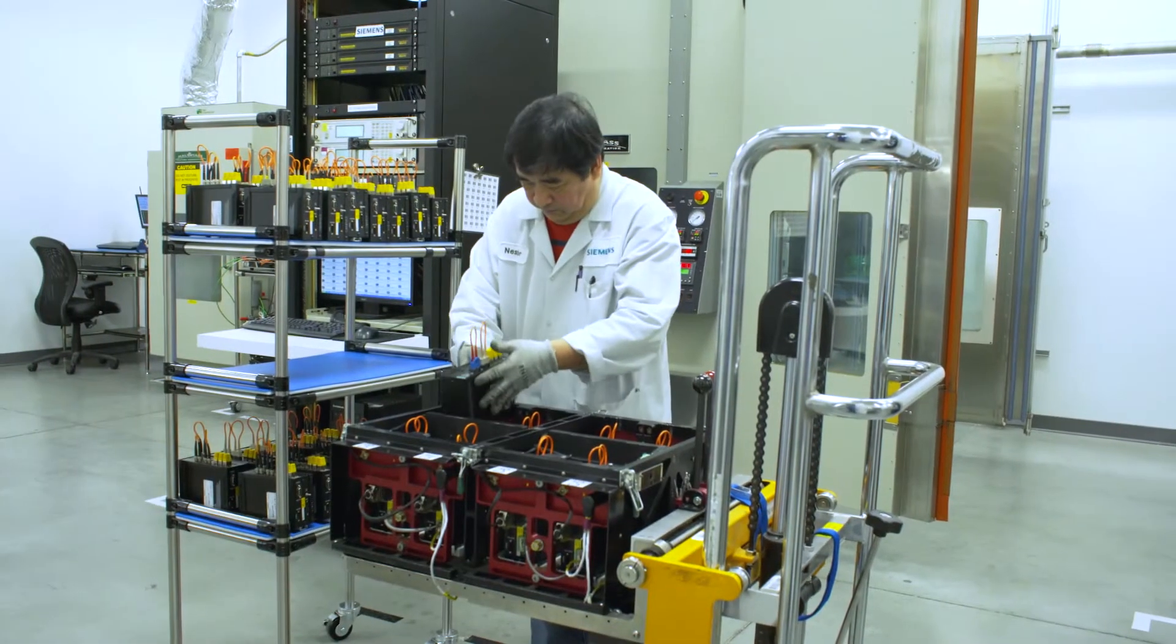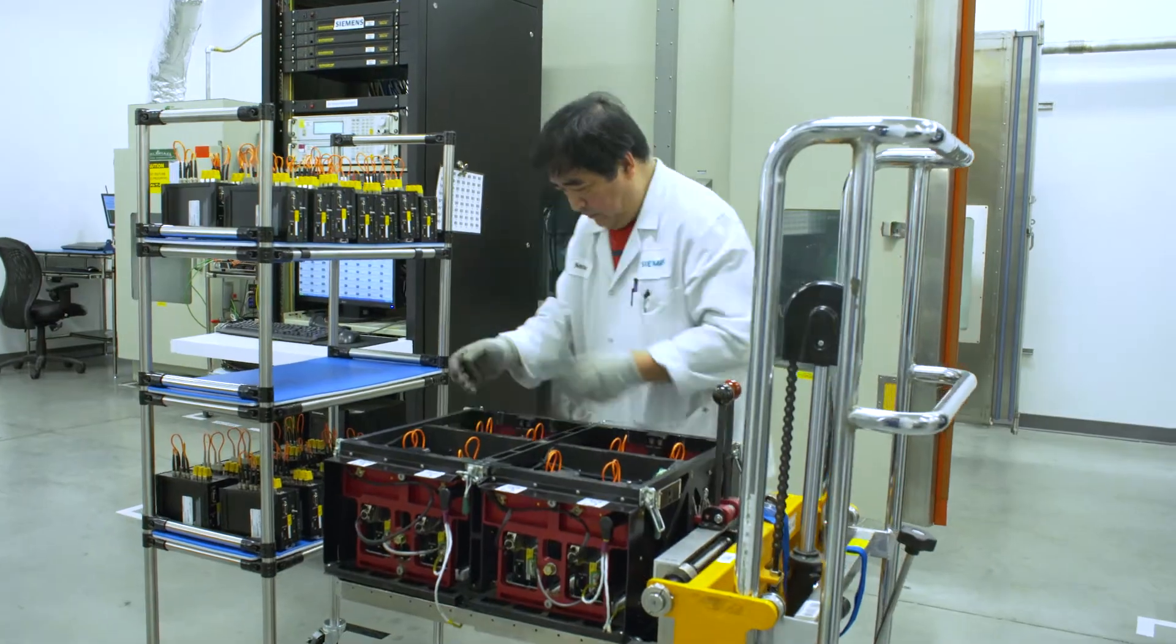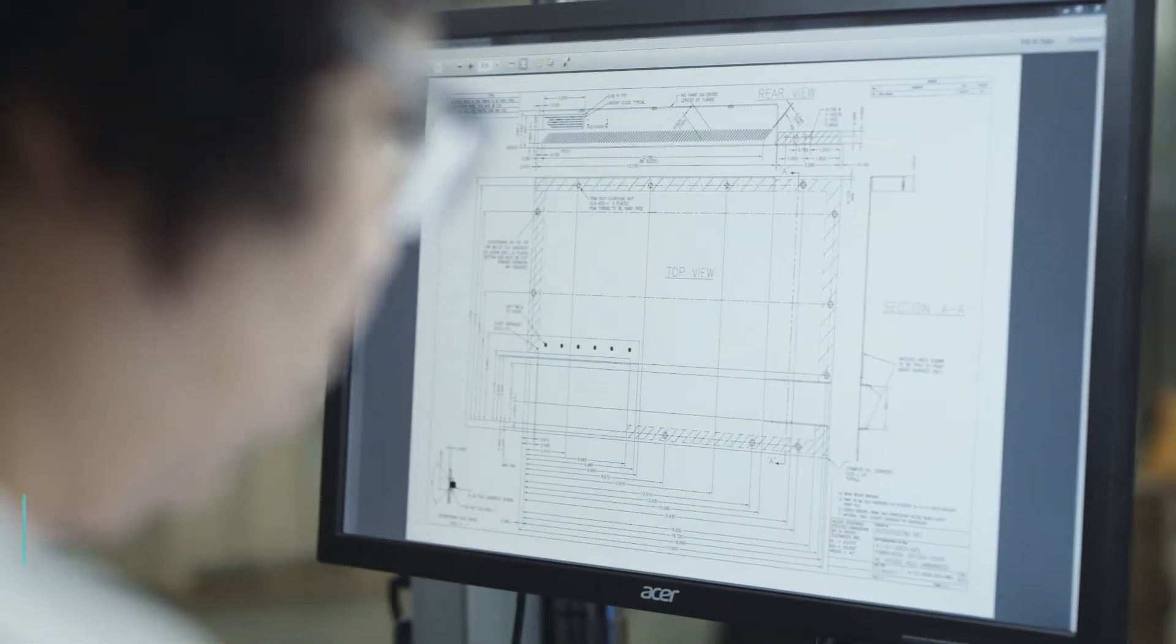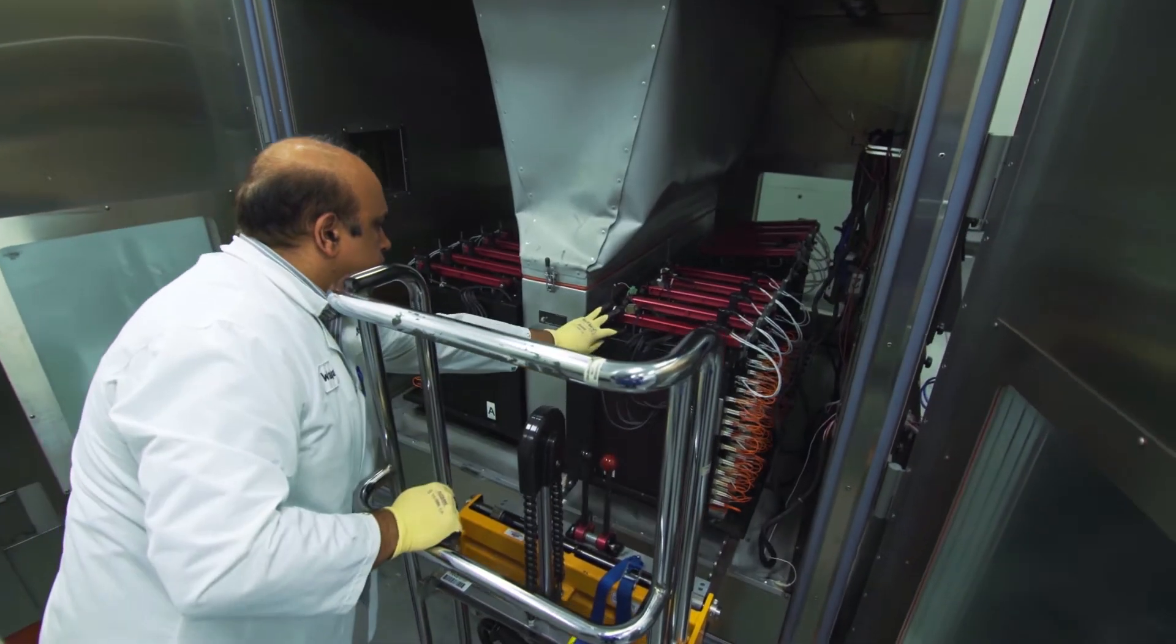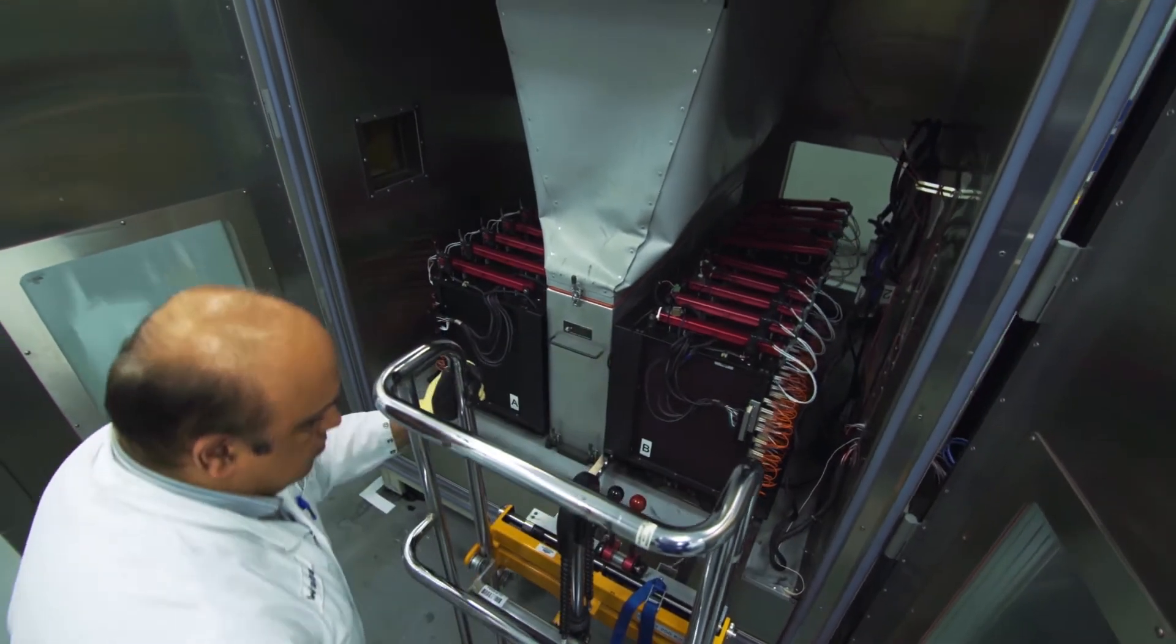Highly accelerated stress screening is used to ensure that items released from Siemens production lines have zero manufacturing errors. During the HASS process, RuggedCom products are loaded into the chamber.